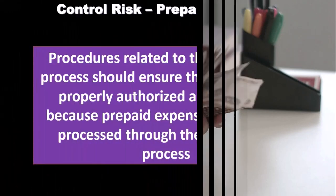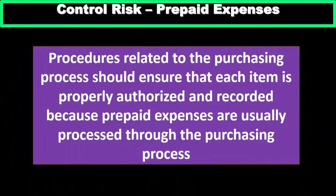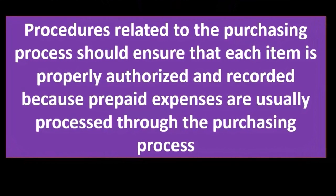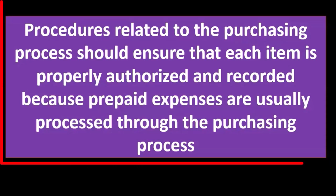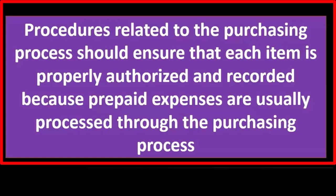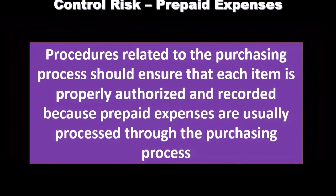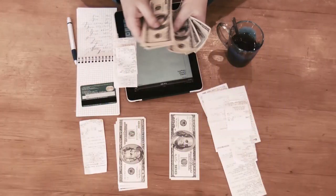Now we consider the control risk — the controls that the organization has put in place. Once we consider both control risk and inherent risk, we can set detection risk to determine the level of testing we want to do. Procedures related to the purchasing process should ensure that each item is properly authorized and recorded, because prepaid expenses are usually processed through the purchasing process.